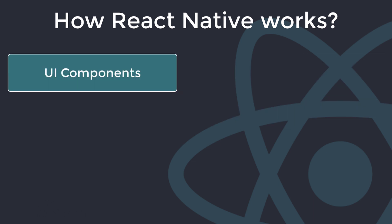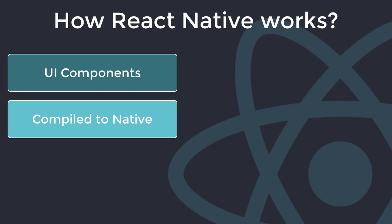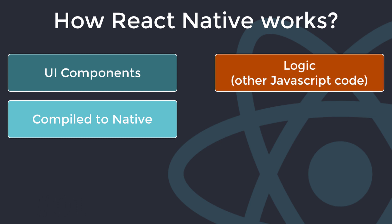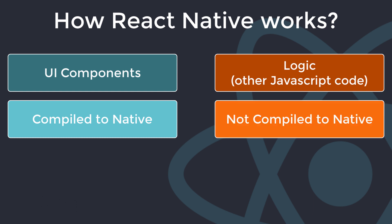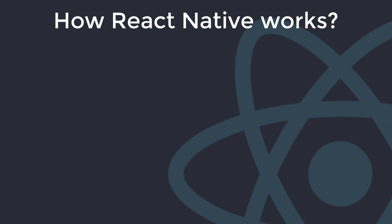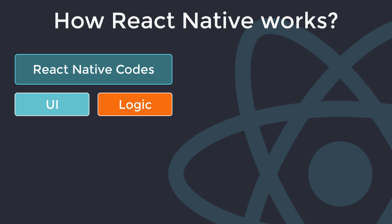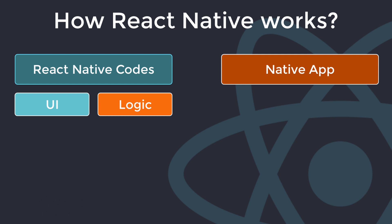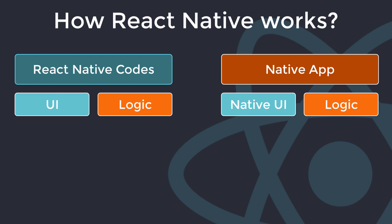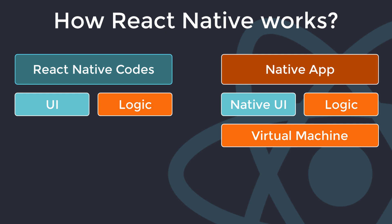For UI, React Native gives you special components which are then compiled to native views. For your other logic — if you're sending HTTP requests or transforming data — all your other JavaScript code is not compiled to native code. Instead, it runs on a special thread hosted by React Native. In general, your code in React Native is divided into two parts: the components that make up the UI, and the JavaScript code that makes up the logic. When React Native code is compiled into a native app, the UI components become native widgets, but the JavaScript code remains the same. Your JavaScript code runs in a special virtual machine hosted by React Native inside your app.